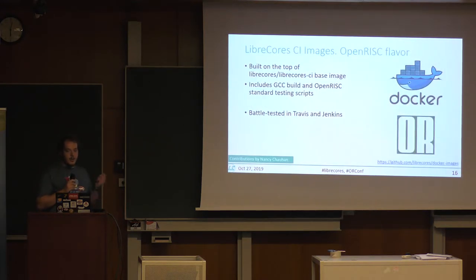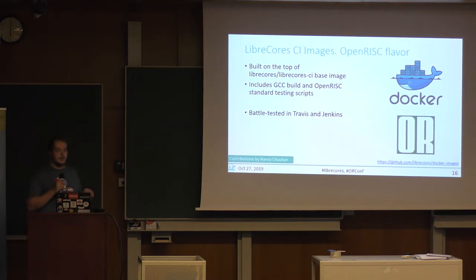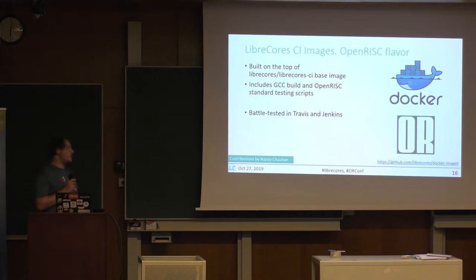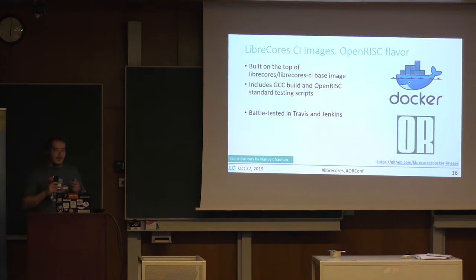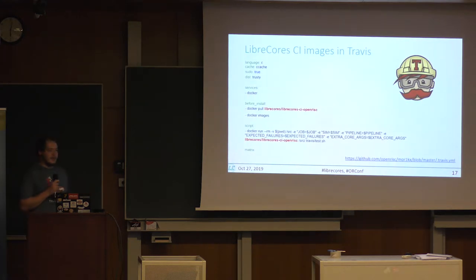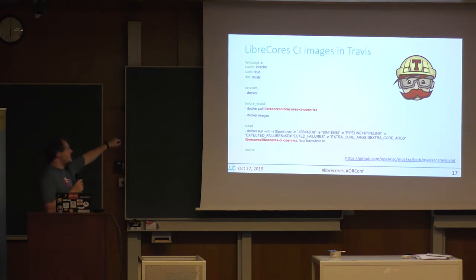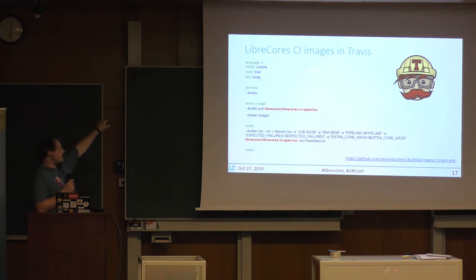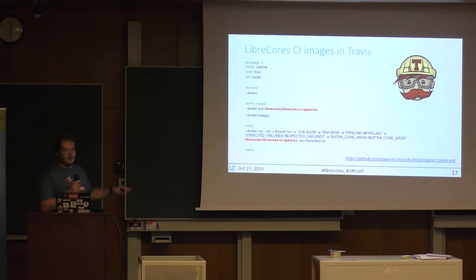One of the things we got was a specific flavor of LibreCourse CI images for OpenRisk. If you develop projects on top of OpenRisk, we now have a base image which includes GCC and standard OpenRisk testing tools. So if you're an OpenRisk maintainer, you can just take this image and start running it. And even though our main target was LibreCourse CI in Jenkins, it's also possible to use these images in Travis — you just pull the image, invoke it from your script, and all simulation and testing flows run inside.